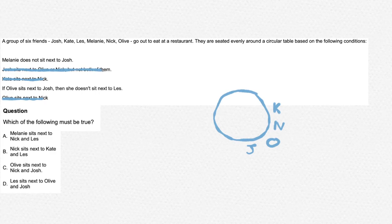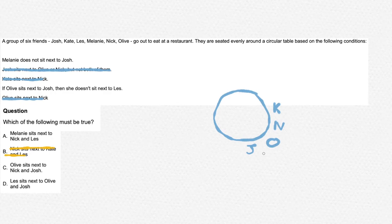Now let's read the question: which of the following must be true? 'Melanie sits next to Nick and Les' — that is not true as you can see in the table. 'Nick sits next to Kate and Les' — this is not true as you can see in the diagram. 'Olive sits next to Nick and Josh' — as you can see in the diagram, this is true, as Olive is in the middle of both of them. Therefore, our final answer is C.